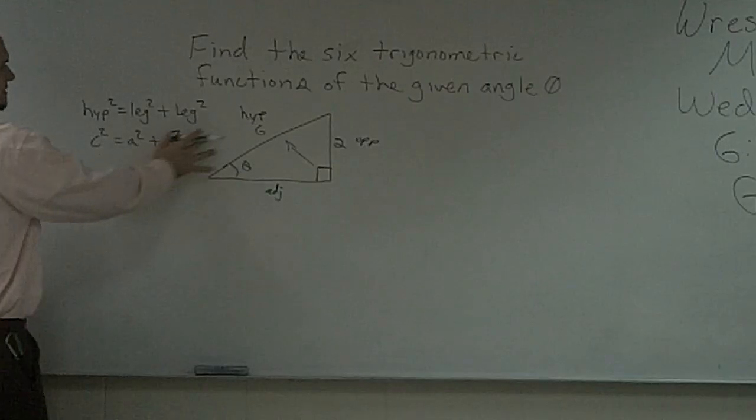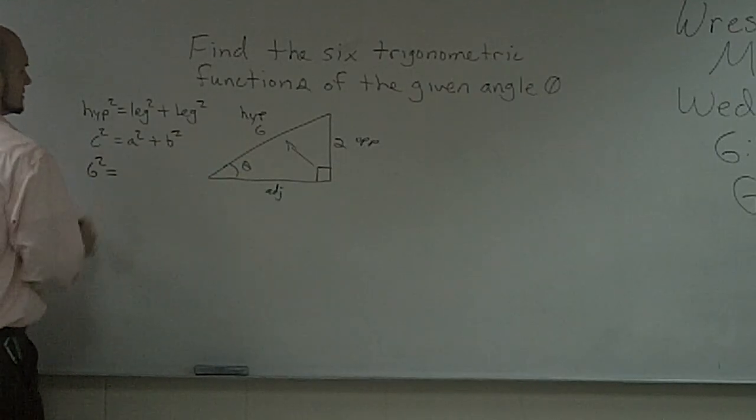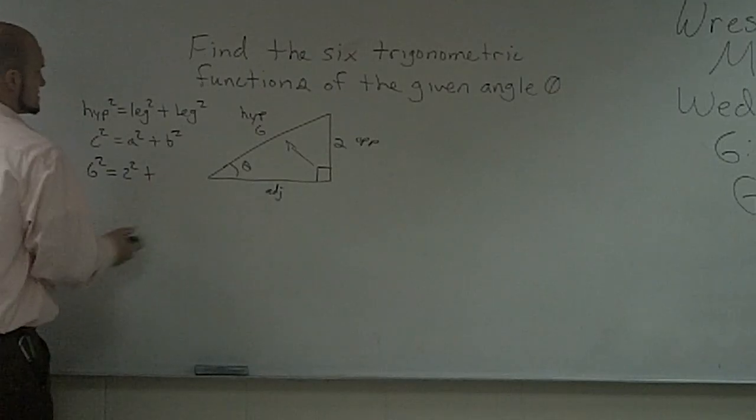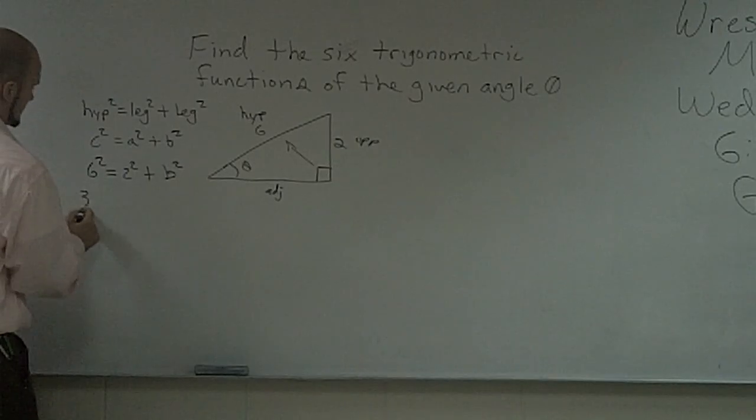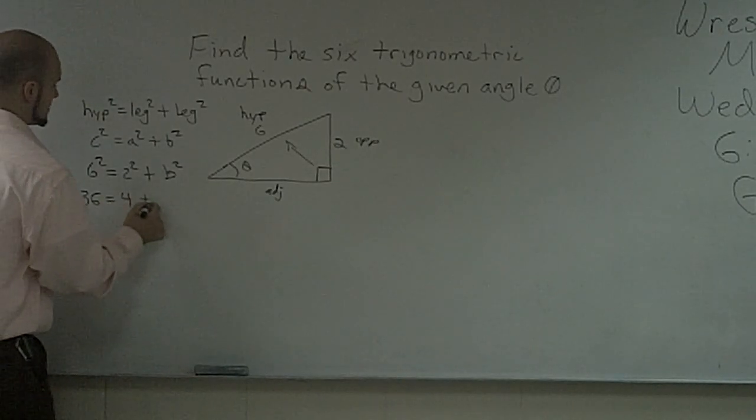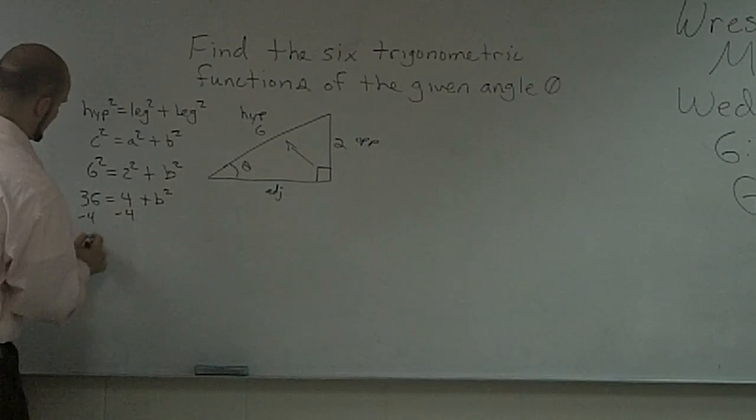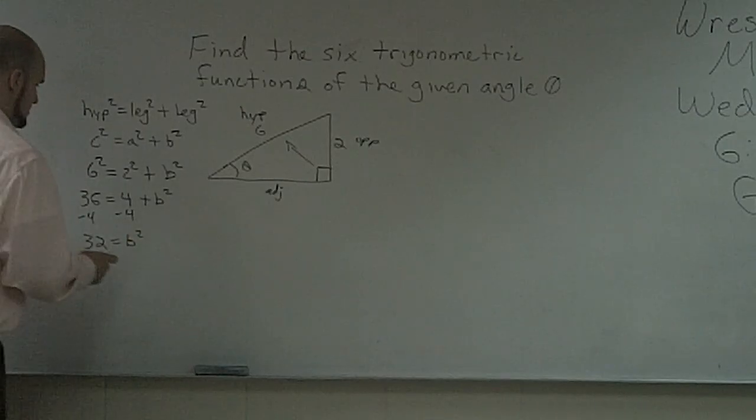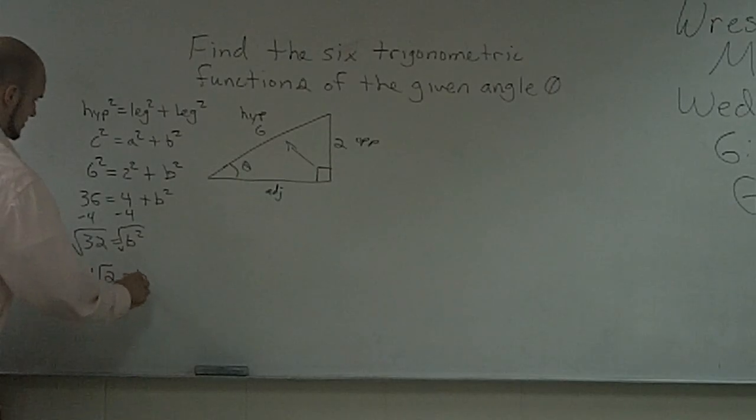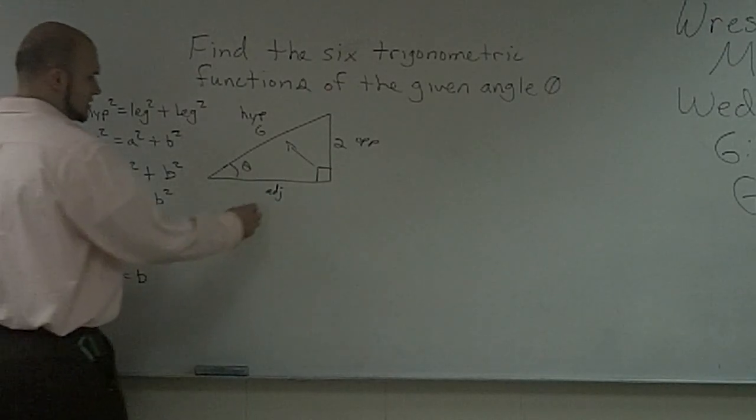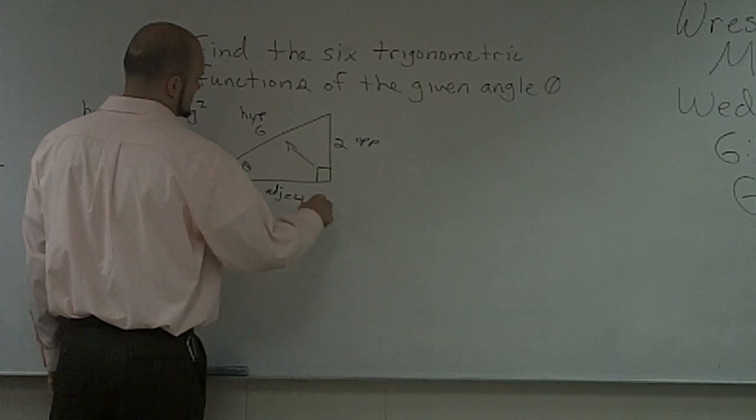So now, I'm just going to plug in my values. So I have 6 squared equals 2 squared plus b squared. 36 equals 4 plus b squared minus 4. 32 equals b squared, take the square root. I notice that this is going to be 4 times square root of 2 equals b. So my adjacent side is going to equal 4 times square root of 2.